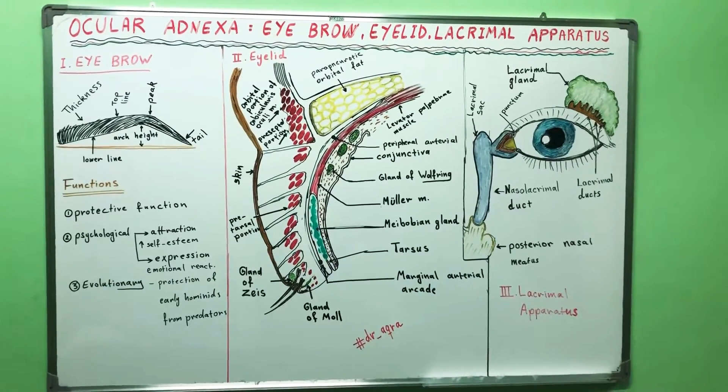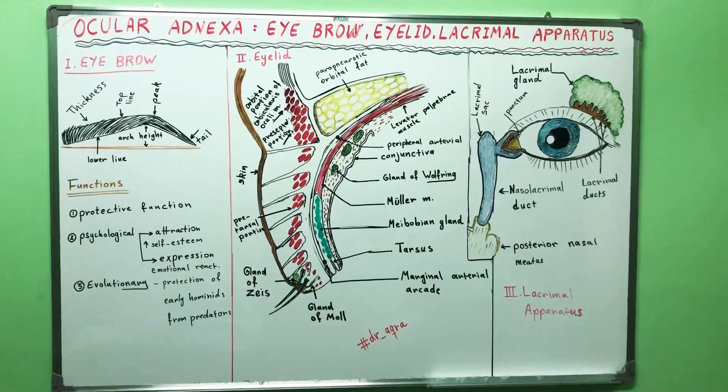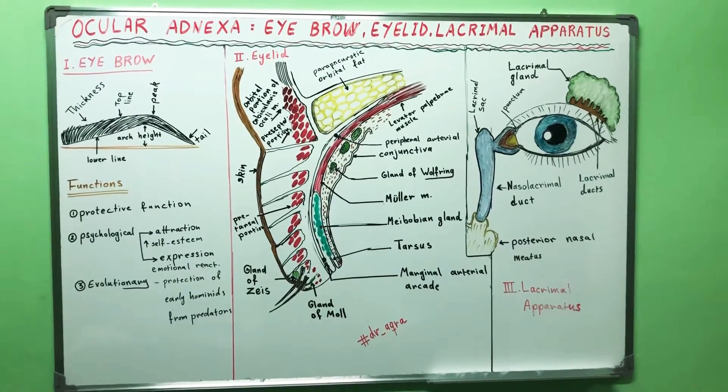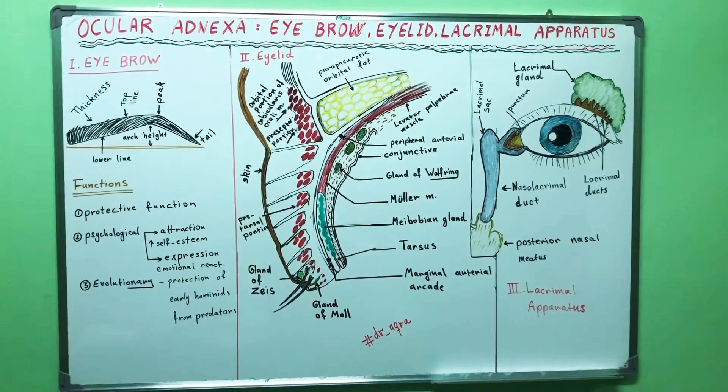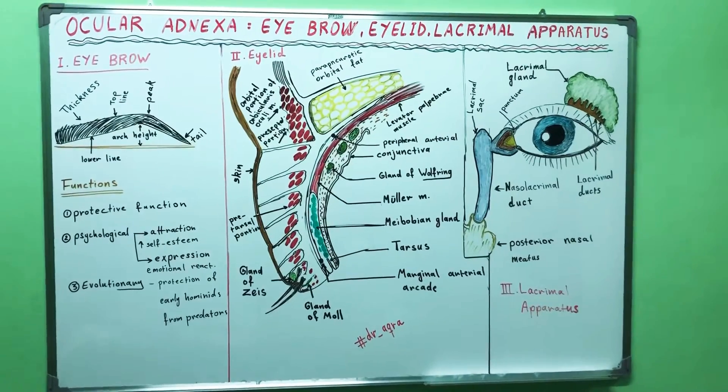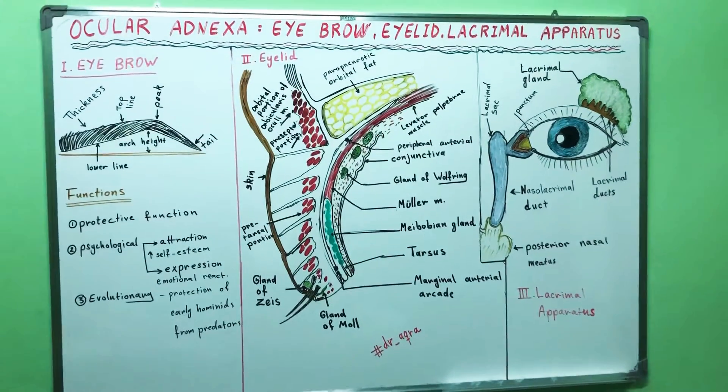Today our lecture is about the ocular adnexa as a part of lectures about ocular anatomy and physiology. What do we mean by ocular adnexa?